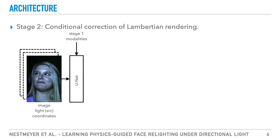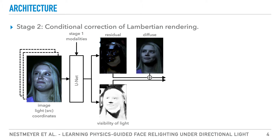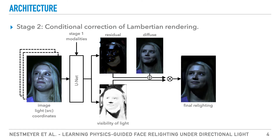In stage 2, we use all stage 1 modalities to predict a non-diffuse residual and a light visibility term for cast shadows. Composing them with the diffuse relighting from stage 1, according to our structured decomposition, produces the final relighting.